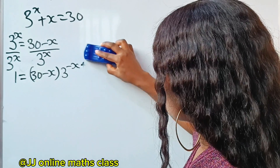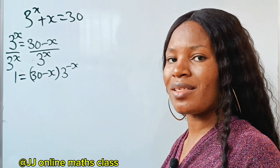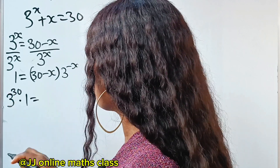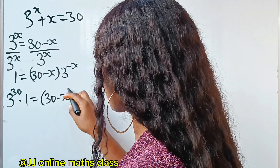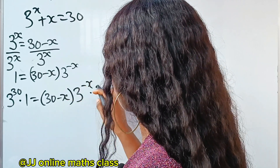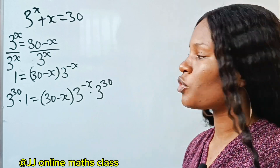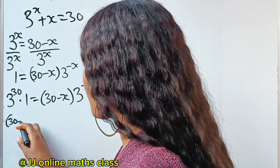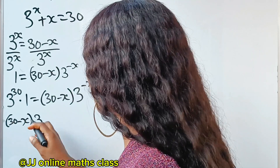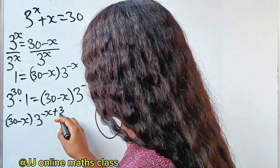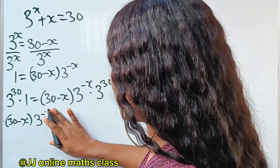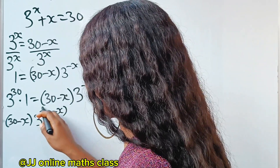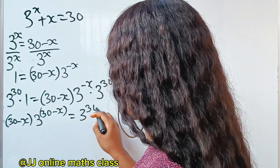Multiplying both sides by 3^30, we have 3^30 · 1 equals (30 minus x) · 3^(−x) · 3^30. This gives us (30 minus x) · 3^(30 minus x) equals 3^30.